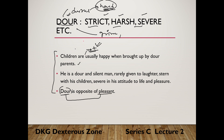The Latin word is 'durus' — D-U-R-U-S — meaning hard. Example sentences: children are not usually happy when brought up by dour parents. He is a dour and silent man, rarely given to laughter, severe in his attitude to life and pleasure. So dour is the opposite of pleasant.